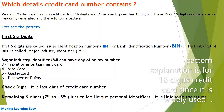In the credit card number, the first six digits are called the Issuer Identification Number (IIN) or Bank Identification Number (BIN). The first digit of the BIN is called the Major Industry Identifier (MII). This MII can have any of the following numbers.